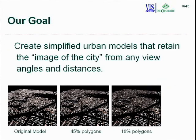Our goal is to create simplified urban models that retain the image of the city from any view angle and distance. For example, the original model on the left is reduced to 45% of polygons in the middle and 18% on the right. Even at 18% polygons, important features like the road and city square area are retained, and you still get the sense that it is the same city.